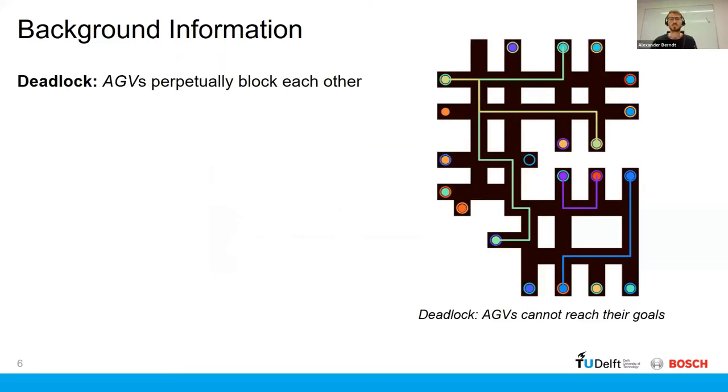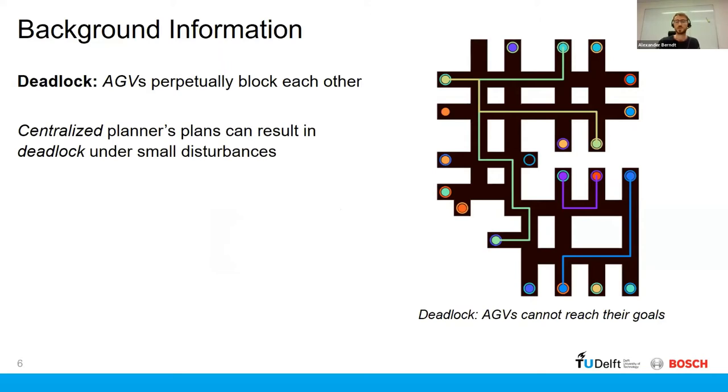Now, let me just explain the concept of a deadlock first. So a deadlock is essentially where AGVs perpetually block each other, and then thus cannot actually reach their goals in finite time. And even if we use a planner such as ECBS or a centralized planner, which is theoretically deadlock-free, a small disturbance to the execution of that plan can still result in deadlocks.